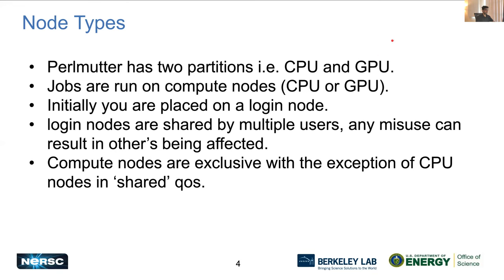Perlmutter, as Rebecca described in the morning, is a heterogeneous system consisting of two different types of partitions: the CPU nodes and the GPU nodes. When you initially log into the system, you're placed on a login node, which is basically something in between, containing one GPU and one CPU. That is a shared node and the use case for a login node is just to do simple text editing, job batch script writing, and submitting jobs.